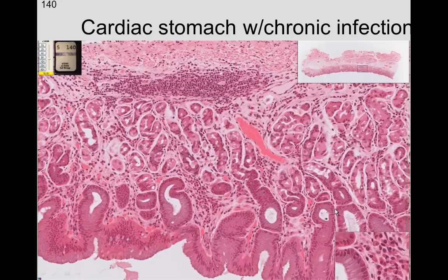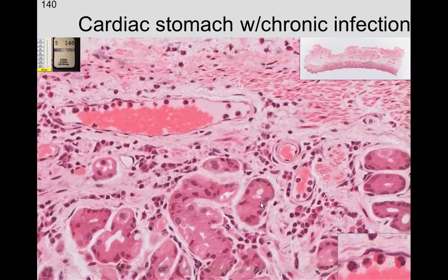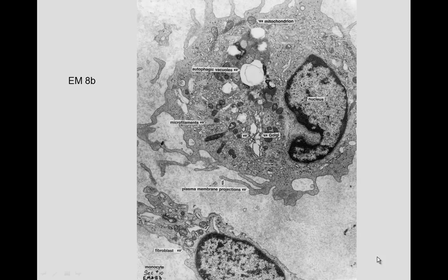Looking at a cardiac stomach with a chronic infection, we can see lots of white blood cells. At higher magnification, there are many plasma cells, which produce antibodies to help neutrophils phagocytize the pathogens. In a blood vessel, many cells are marginating — attached to the venule wall — and will migrate out into the region of chronic infection.